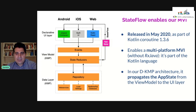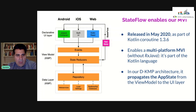In our DKMP architecture, StateFlow propagates the app state from the view model to the UI layer. You can see it in the diagram — StateFlow is the observer that carries this app state from the view model to the UI layer. Its function is essentially that of an observer.